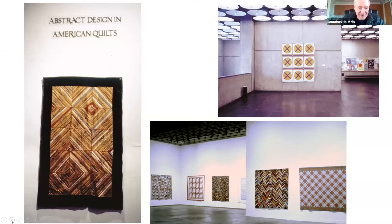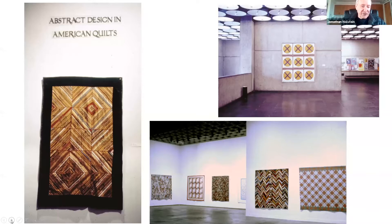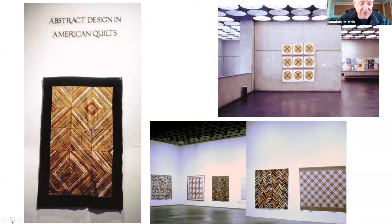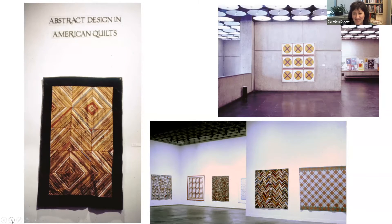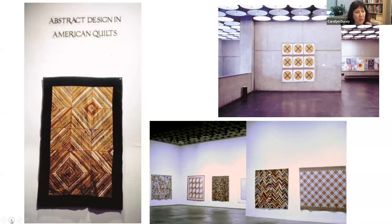The quilt on the left is interesting because it's made from silk cigar bands from the 1880s and 90s when this quilt was made. Boxes of cigars came with silk bands with the name of the cigar under it, and some women collected them. I was just thinking of their poor husbands being urged to smoke ever more cigars so the women could finish their quilts.